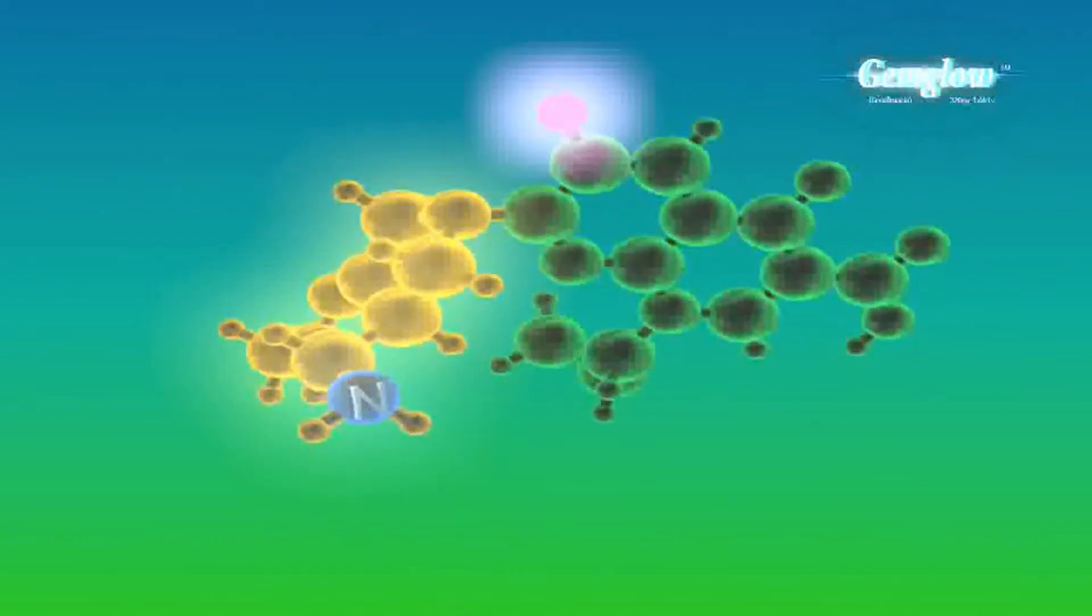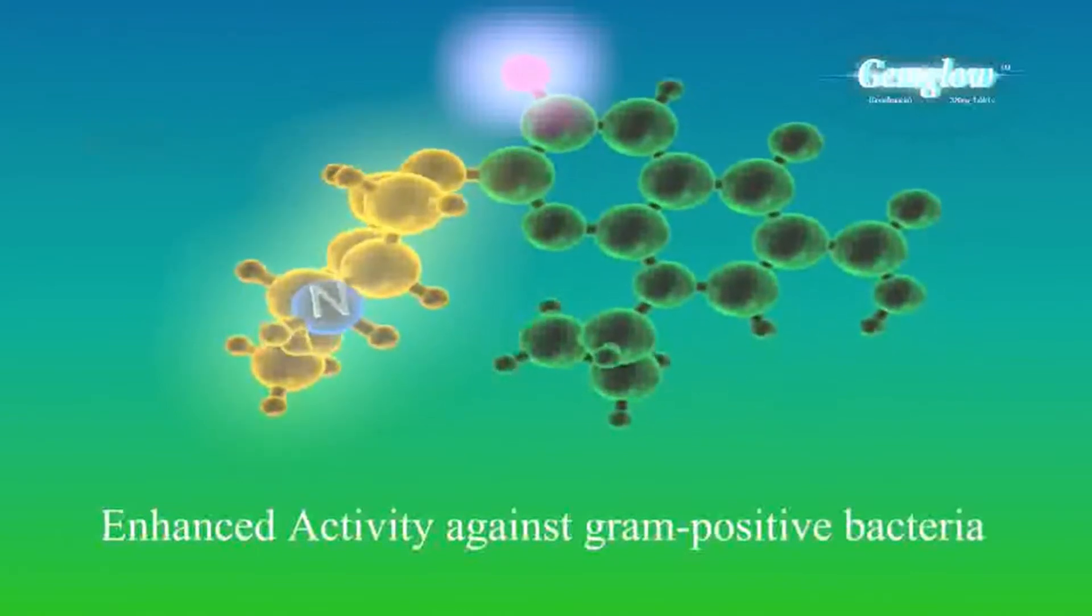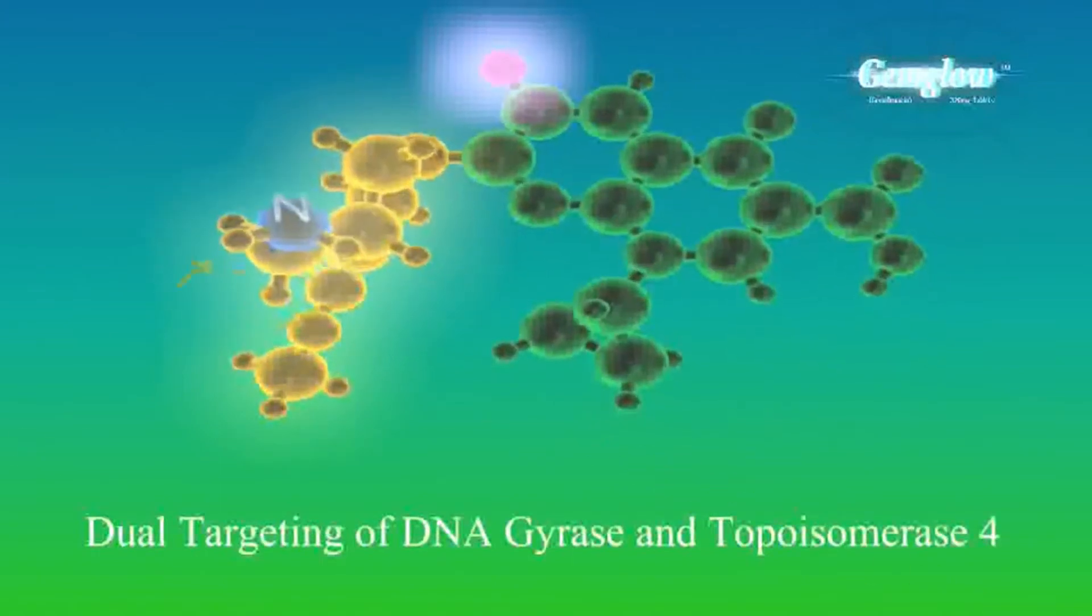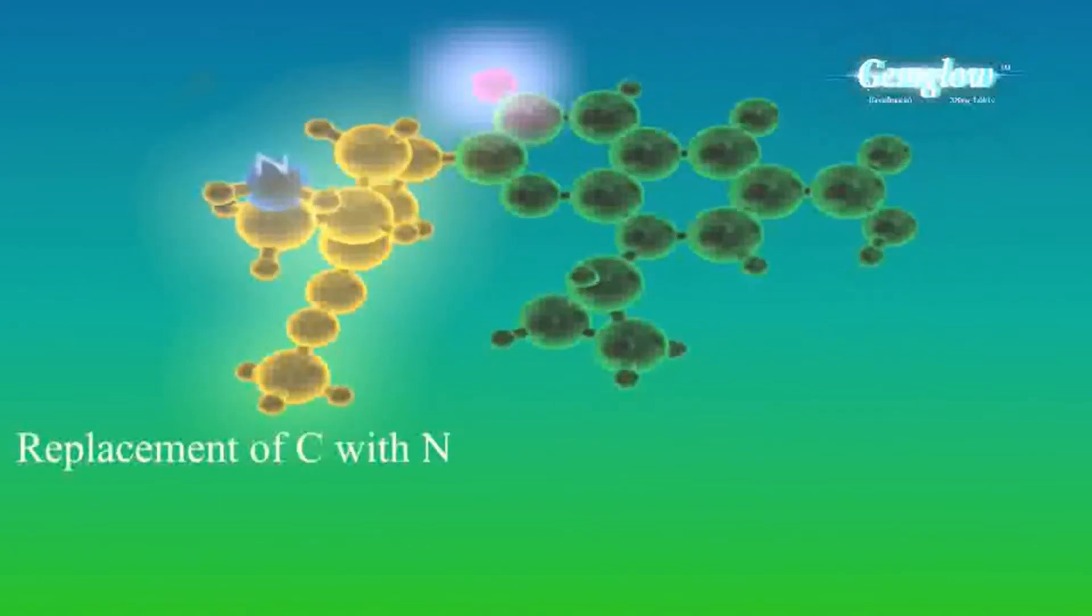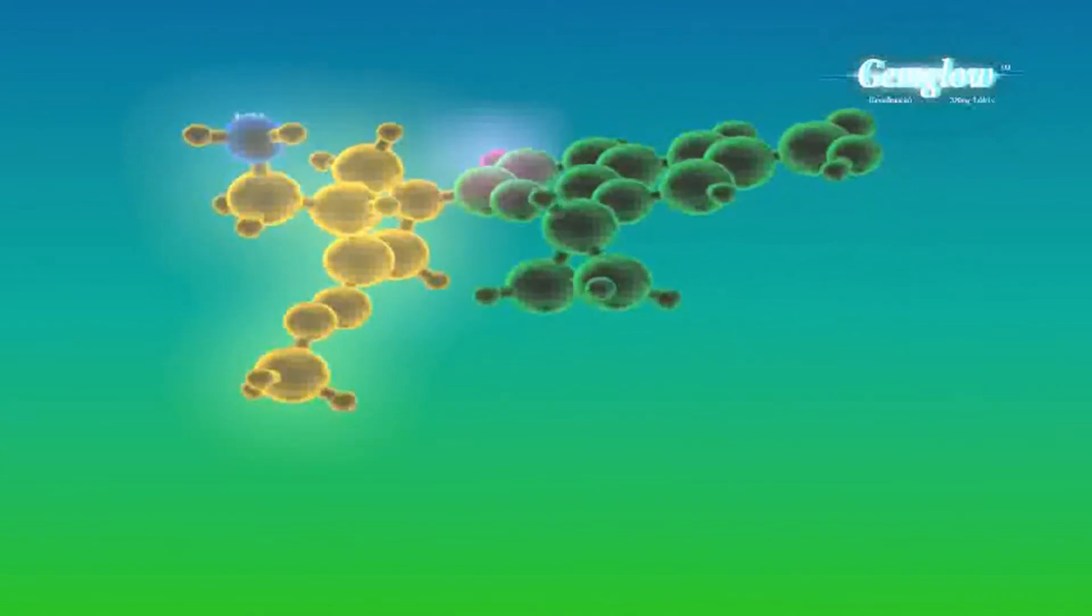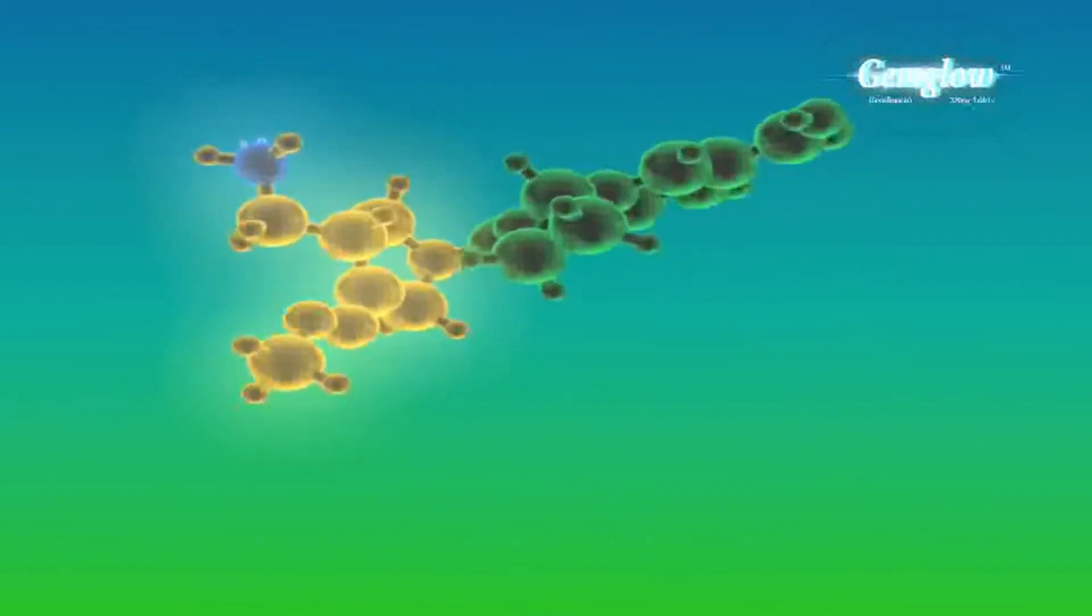Its pyrolidinal ring enhances activity against gram-positive bacteria, with dual targeting of gyrase and topoisomerase 4. Moreover, the replacement of carbon with nitrogen enhances antimicrobial activity against DNA gyrase and topoisomerase 4. This also decreases the development of resistance.